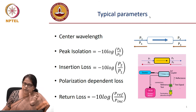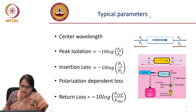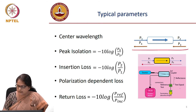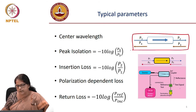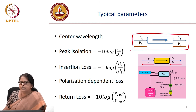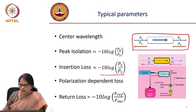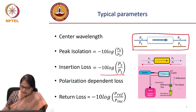You have to be careful about what wavelength of operation you choose. Other parameters include insertion loss, isolation, and polarization dependent loss. For example, for an isolator with input power P1 and output power P2, the insertion loss in dB is minus 10 log(P2/P1), with a negative sign because P2 is always equal to or less than P1. The other important parameter is return loss.